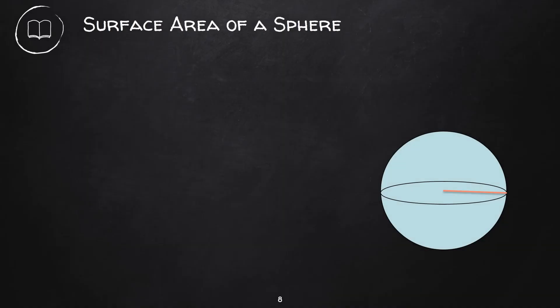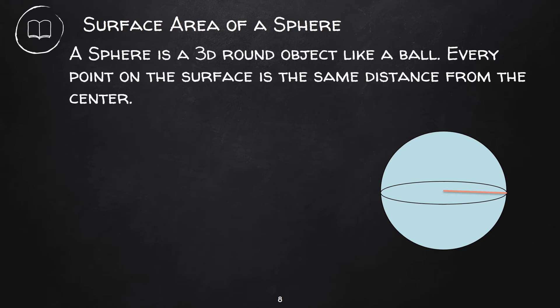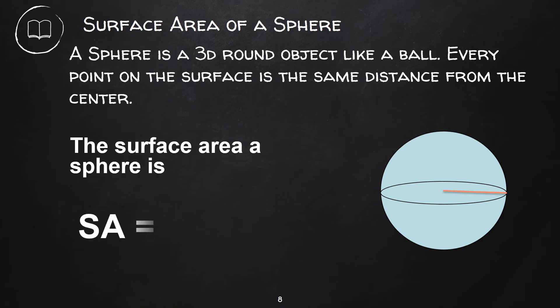This solid is a sphere. A sphere is a 3D round object like a ball. Every point on the surface is the same distance from the center. The surface area of a sphere is 4πr².